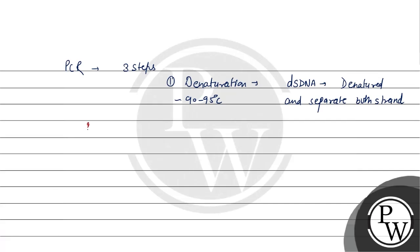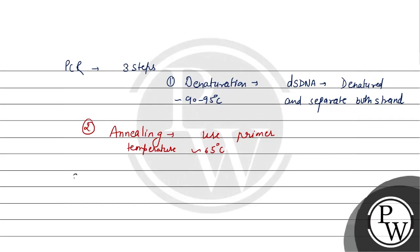The second step is annealing. In the annealing step, primers are used. The temperature required for annealing is around 65 degree Celsius. The third step is extension.